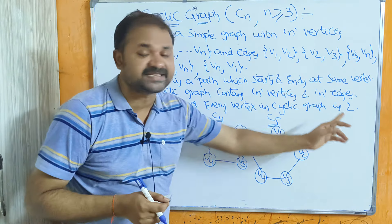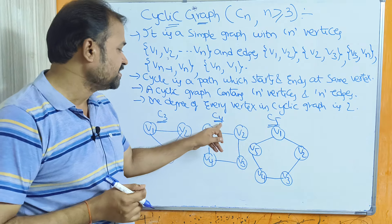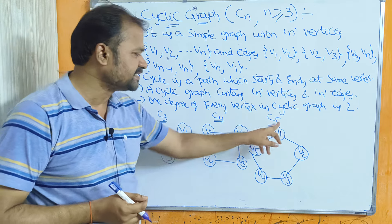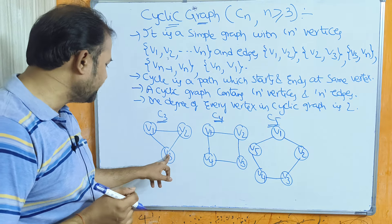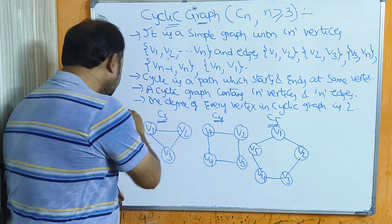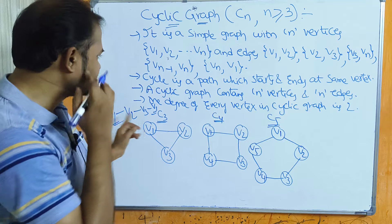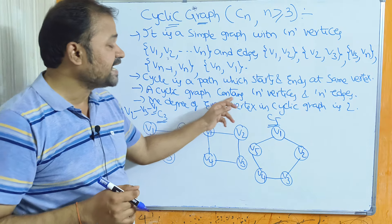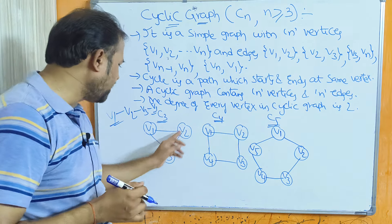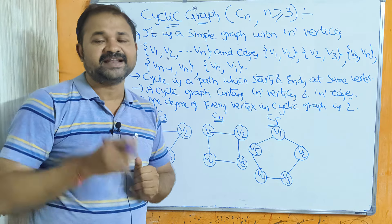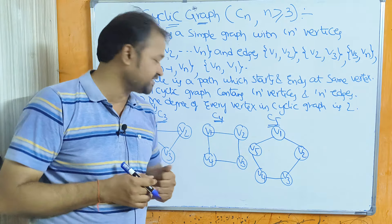The degree of every vertex in a cyclic graph is 2. C3 is a cyclic graph with 3 vertices, C4 with 4 vertices, and C5 with 5 vertices. In C3: V1 to V2, V2 to V3, V3 to V1 — we can traverse V1→V2→V3→V1, which is a cycle that starts and ends at the same vertex.